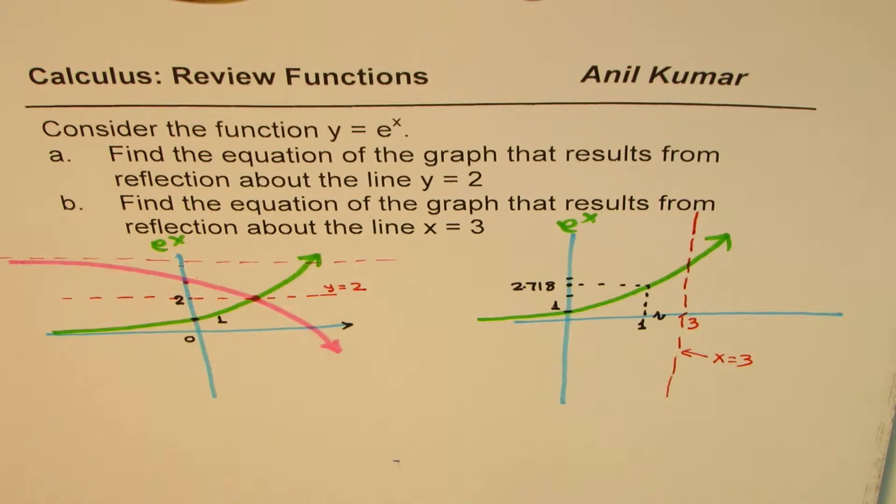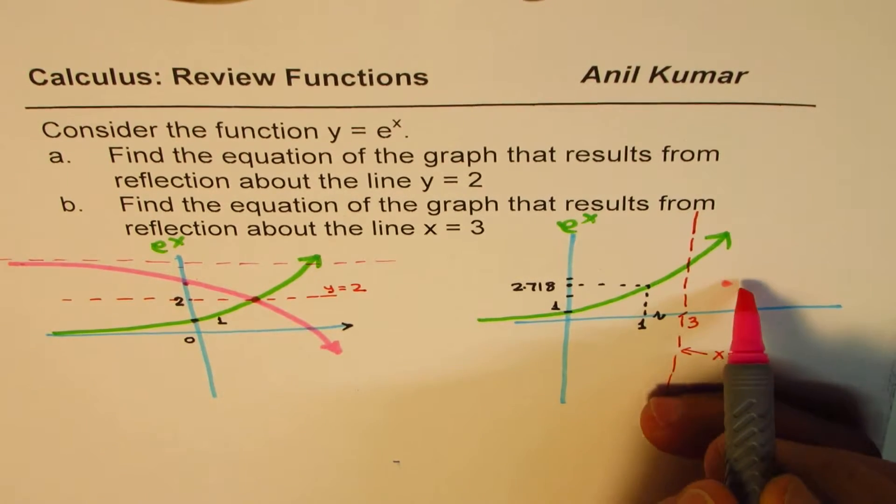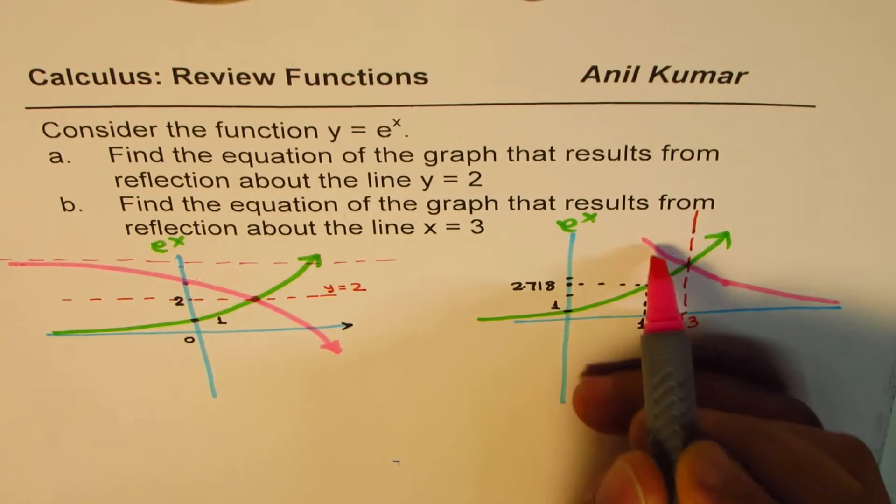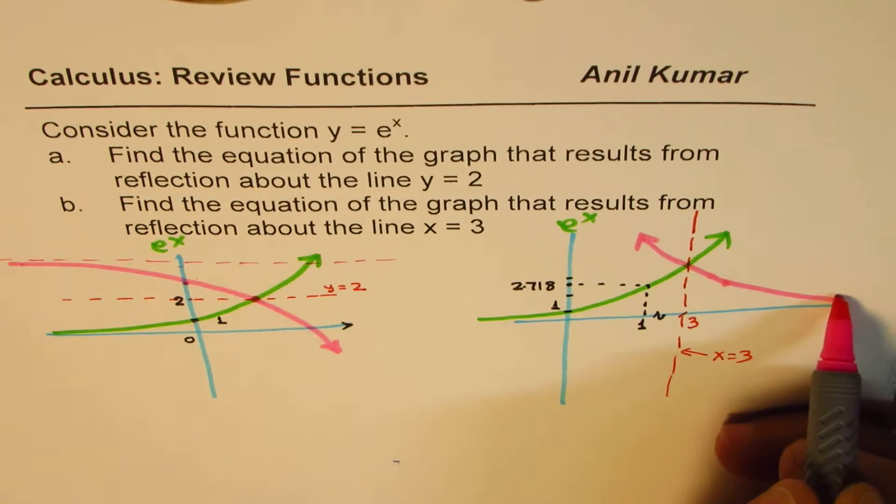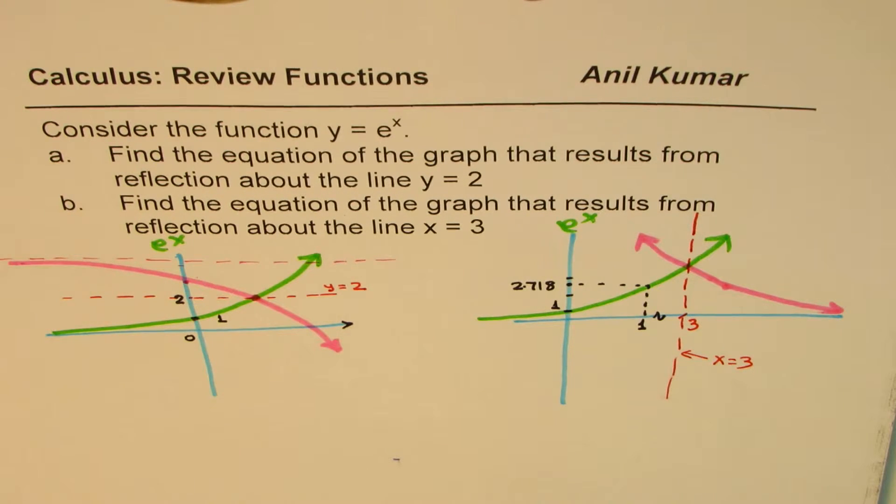So if I have to reflect on this line, then the graph of the function will be, this is our mirror. So it will be, this point gets reflected here. So it kind of, it is like this. Is that okay? So that is how the graph is going to look like.